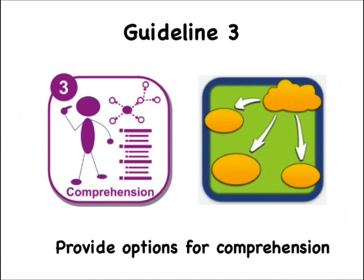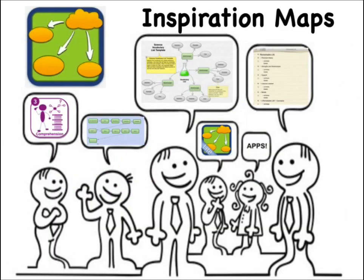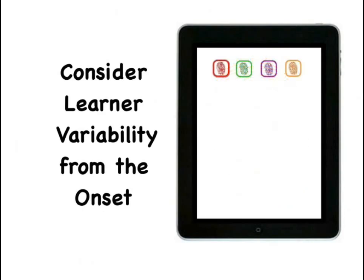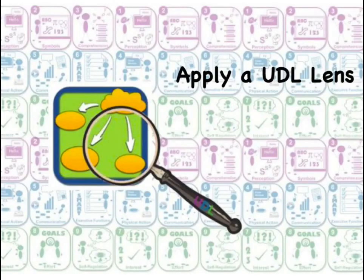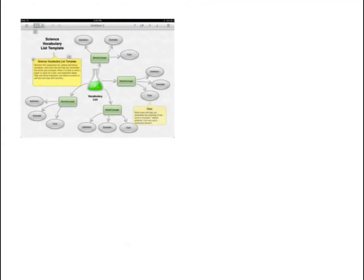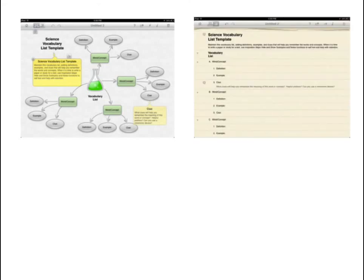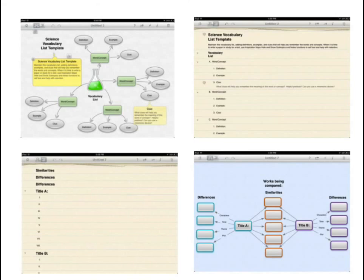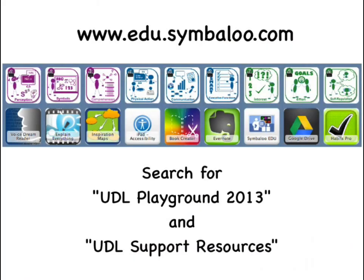In this video, we have explored how Inspiration Maps effectively supports options for comprehension. As you design your units and lessons, consider student variability from the onset. View each app through the lens of UDL to ensure it is a rich tool that helps make learning accessible to all. The use of Inspiration Maps supports many UDL principles — the app seamlessly blends visual learning with a written outline. Providing Inspiration Maps as an option for most tasks fosters choice and allows students to use their visual strengths. To learn more about Inspiration Maps and other UDL apps, please visit edu.symbaloo and explore our webmixes.